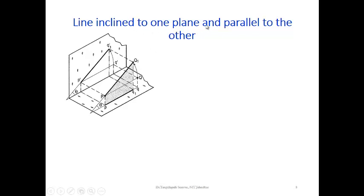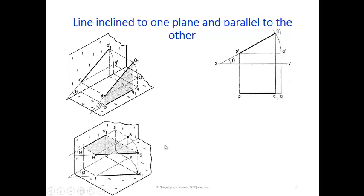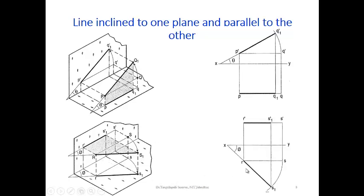Line inclined to one plane and parallel to the other: the line is inclined theta degrees to the horizontal plane and parallel to the vertical plane. First, the true length is drawn as the front view and extended to draw the top view. Similarly, the line is inclined phi degrees to the vertical plane and parallel to the horizontal plane; the top view is drawn first showing the inclination, then projections are made to construct the front view.